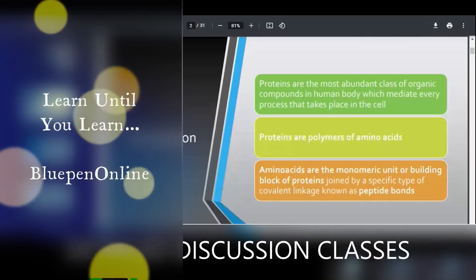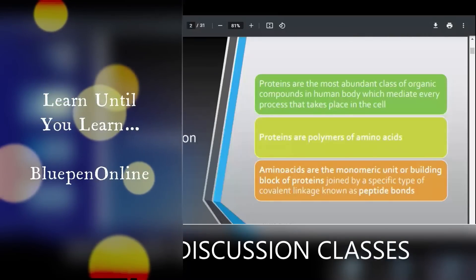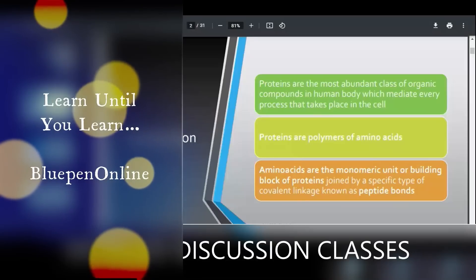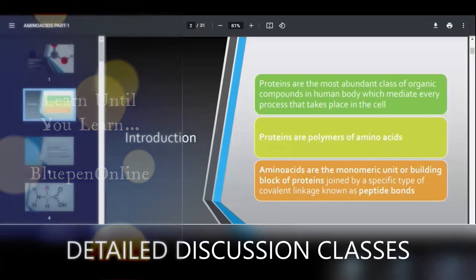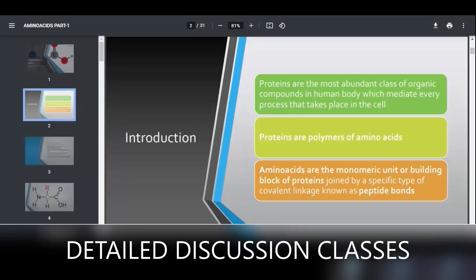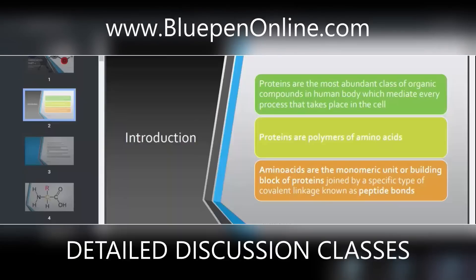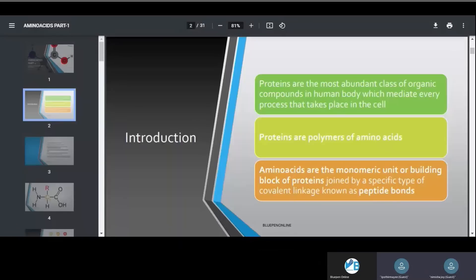Amino acids are the building blocks of protein. Before entering into amino acids, we must know what proteins are. Proteins are the most abundant class of organic compounds in the human body, which mediate every process that takes place in the cell. These proteins are polymers of amino acids — that is the definition.